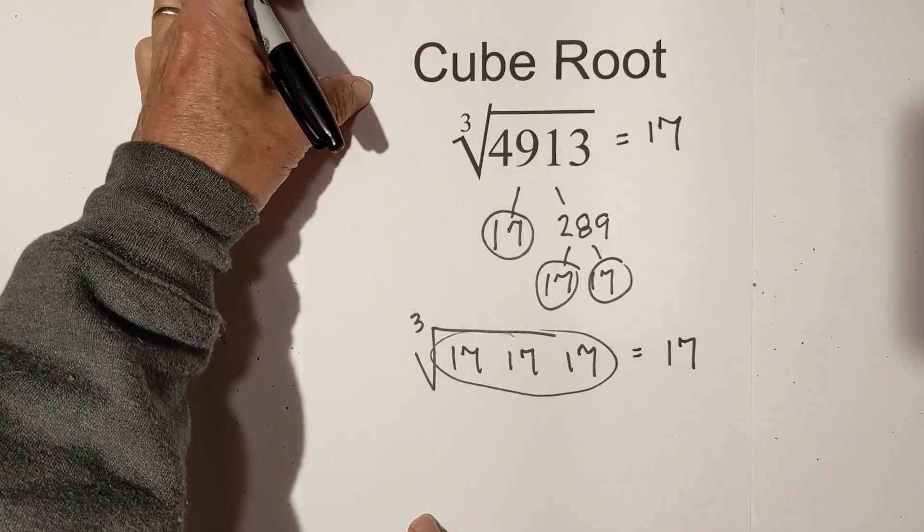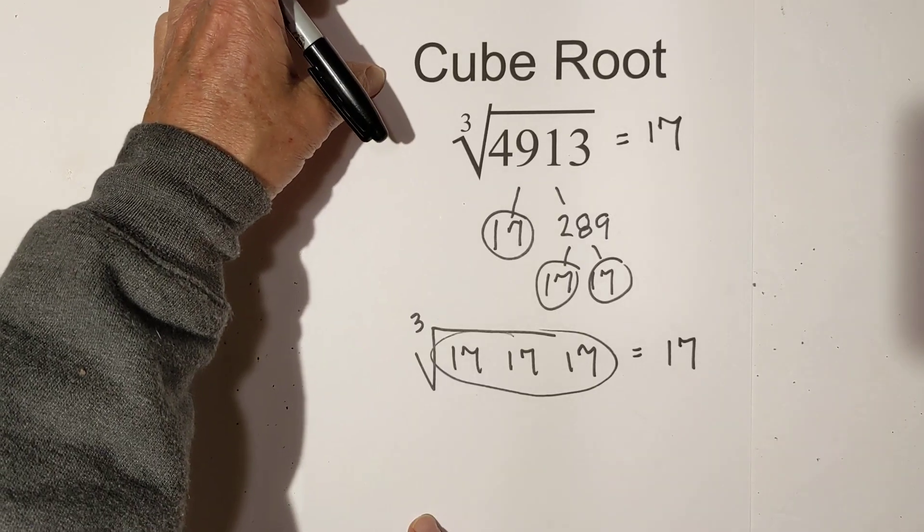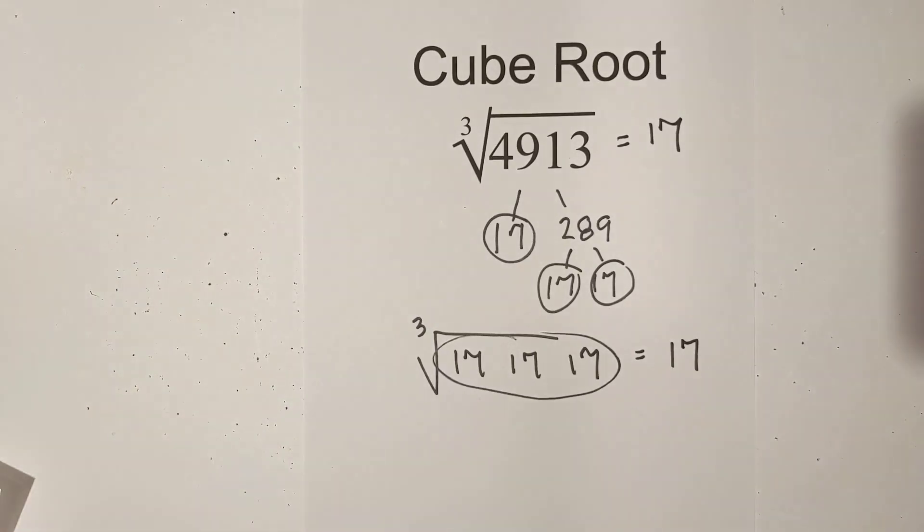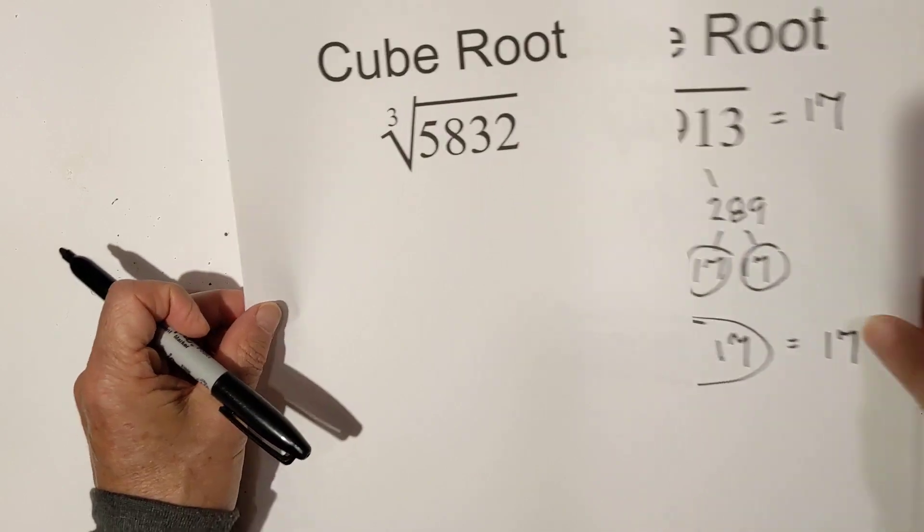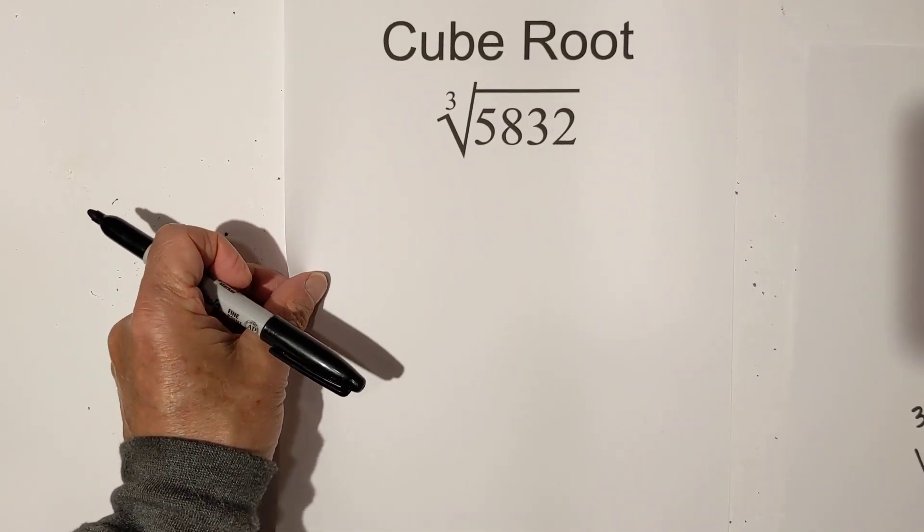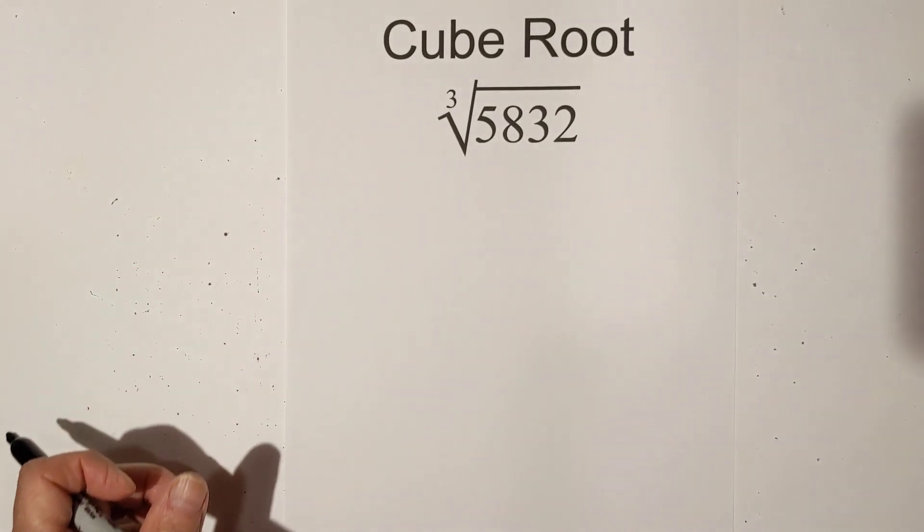That was a nice, quick, easy cube root, I mean factor tree. Now, let's look at 5832, and this factor tree is a little bit more involved.